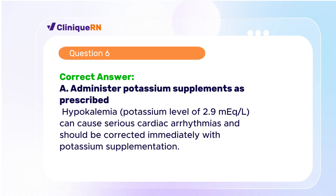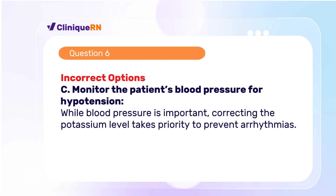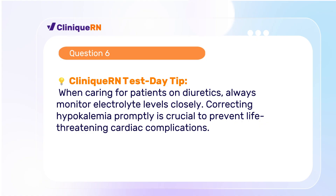The correct answer is A: Administer potassium supplements as prescribed. Hypokalemia, a potassium level of 2.9 mEq per liter, can cause serious cardiac arrhythmias and should be corrected immediately with potassium supplementation. Increasing the diuretic dose could worsen hypokalemia and cause more serious complications. While blood pressure is important, correcting the potassium level takes priority to prevent arrhythmias. The healthcare provider should be notified, but the immediate intervention is potassium replacement. When caring for patients on diuretics, always monitor electrolyte levels closely, as correcting hypokalemia promptly is crucial to prevent life-threatening cardiac complications.